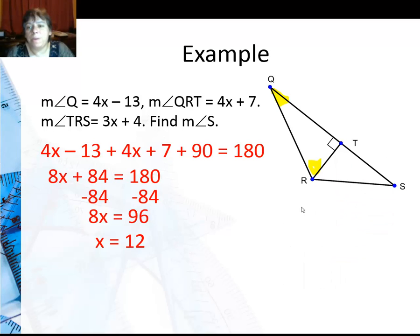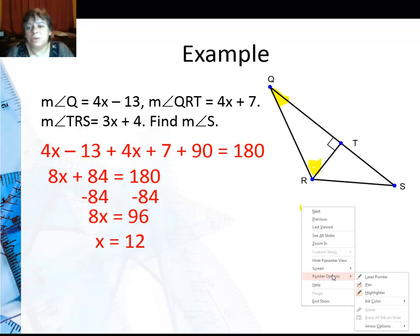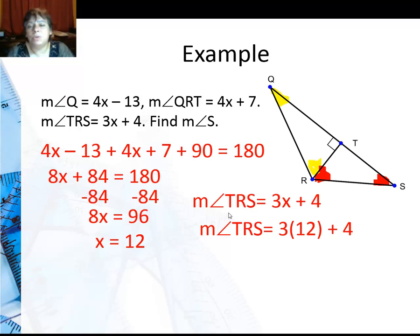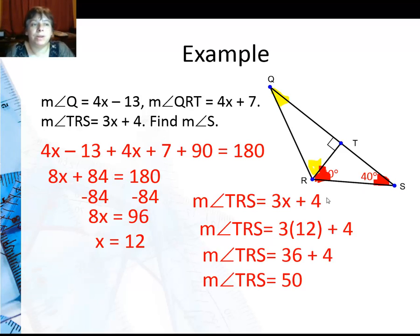So if I mark it, and let me change colors, we'll do red. This angle is going to be complementary to angle S. So I'll substitute in 3 times 12 plus 4, which is 36 plus 4, 50 degrees. That tells me this angle is 50, which means that angle has to be 40 degrees.